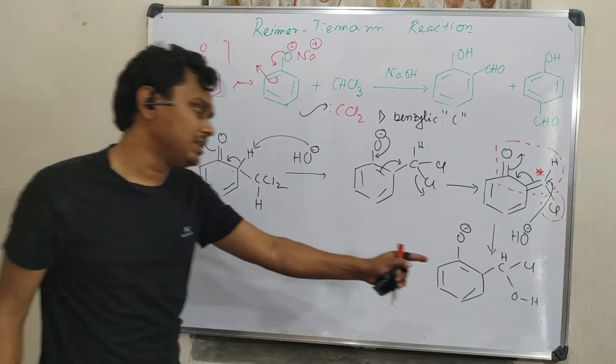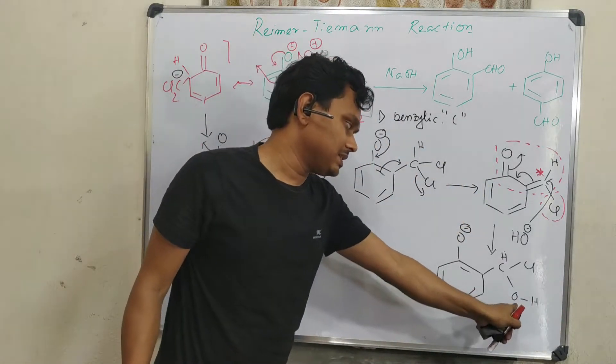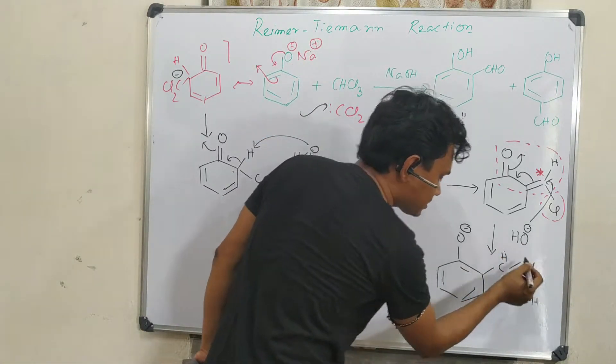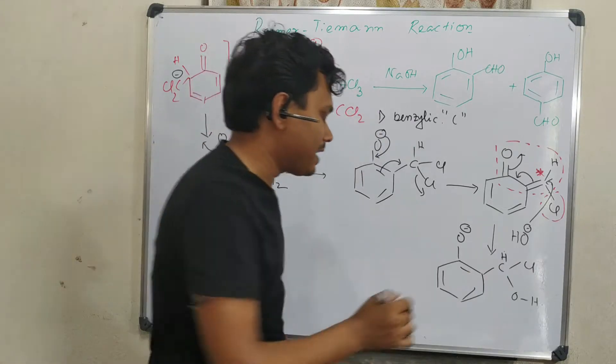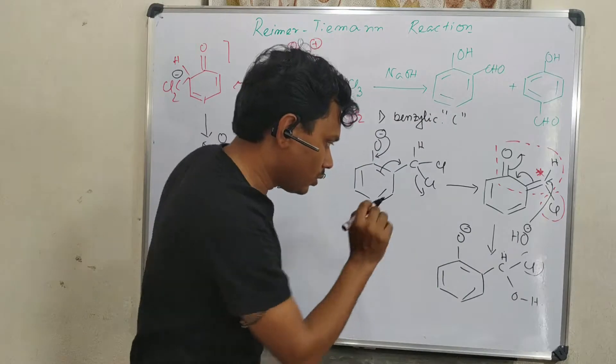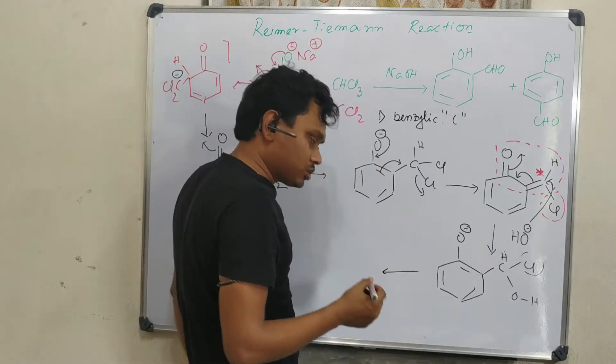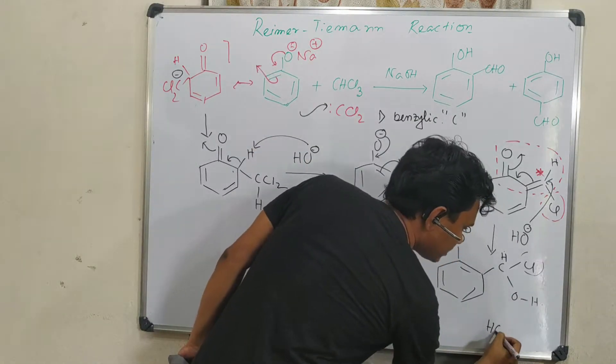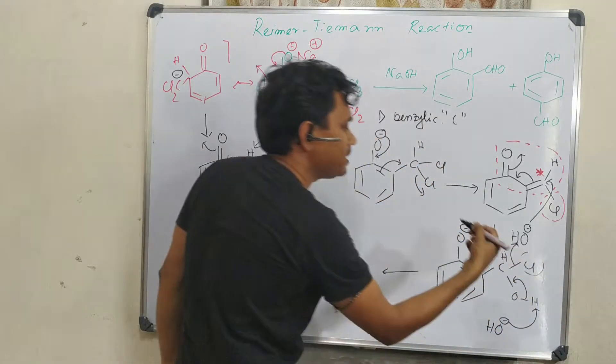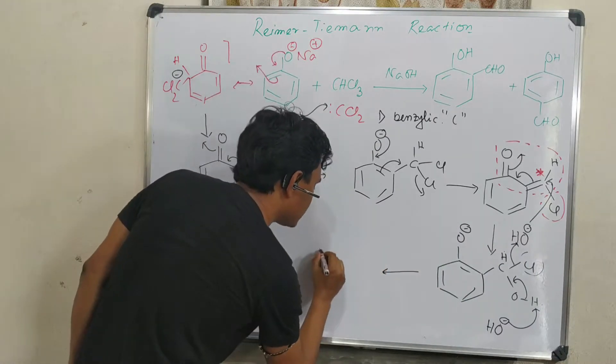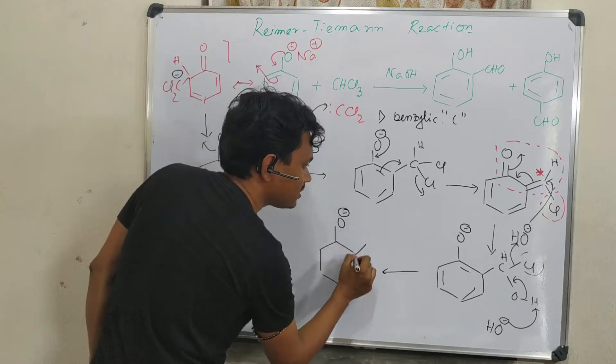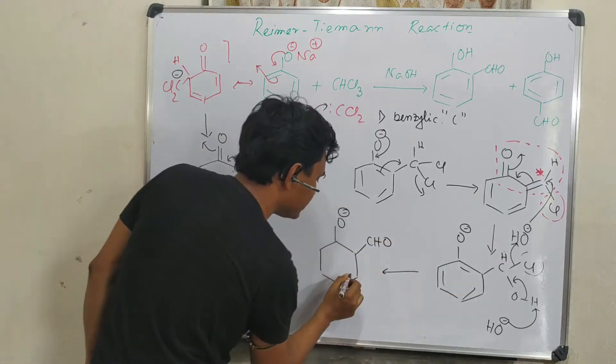You can see this molecule is nothing but an aldehyde attached to chloride. We know that carbonyl groups are more stable. Consequently, the base molecule abstracts this proton. It comes, this pushes, and aldehyde forms. So consequently, it produces this CHO group. That is Reimer-Tiemann product.